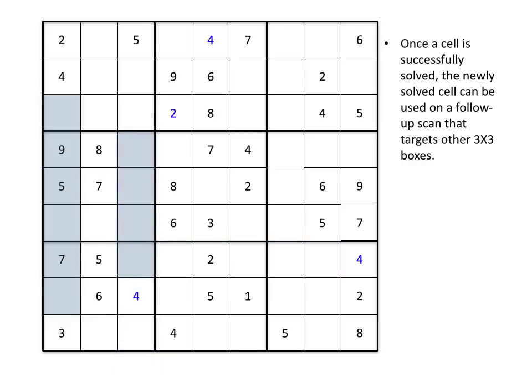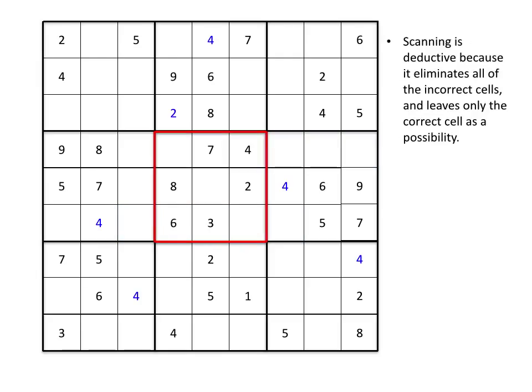So we'll scan that, and notice that the middle left box only has one place where the 4 can go, so we'll plug that in here, and we'll perform a final scan to the right to see where our last 4 goes. And it's in that cell that is currently unshaded. And now we have every 4 accounted for in the puzzle. That means every row, every column, and every 3x3 box now contains a 4. We're ready to try the same strategy on our 5s now.